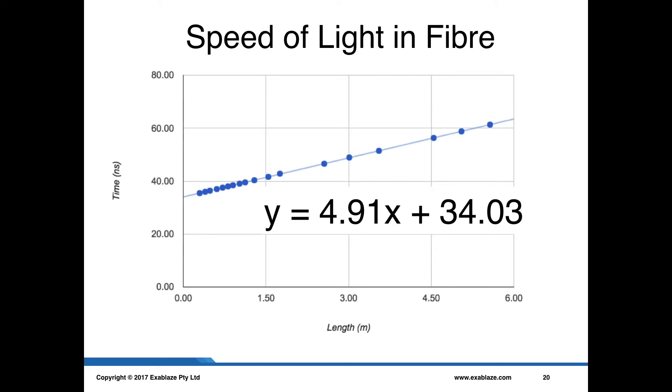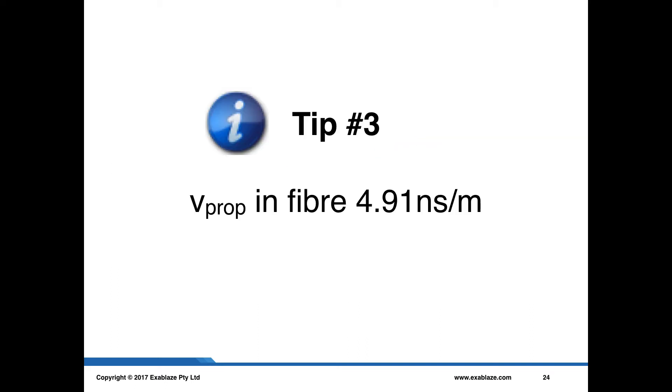With this curve we can form a linear interpolation and we can also see what the quality of fit of that interpolation is. We've got about five nines there worth of correlation and we have this very interesting looking equation. The gradient of that equation, which you can see here is 4.91, describes how the delay increases as the length increases, which is our propagation delay. So we can see here that the v-prop in fiber is 4.91 nanoseconds per meter.